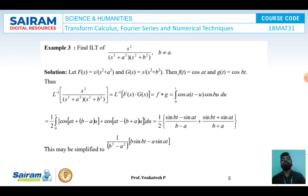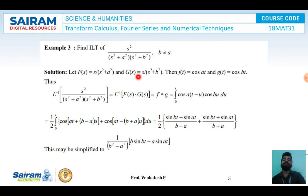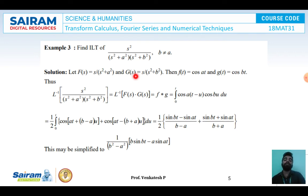Example 3: Find the inverse Laplace Transform of s²/((s² plus a²)·(s² plus b²)) where b is not equal to a. This is solved similarly to the previous problem. We identify f(s) equal to s/(s² plus a²) and g(s) equal to s/(s² plus b²). Applying the inverse Laplace Transform, f(t) equals cos(at) and g(t) equals cos(bt).